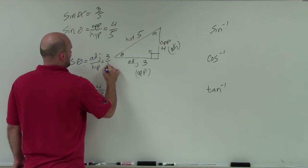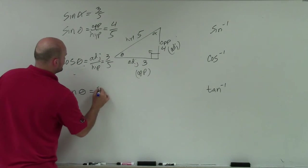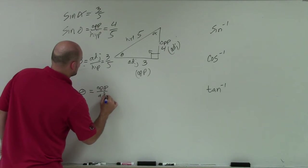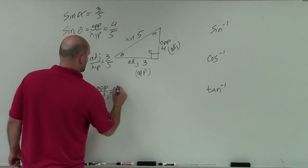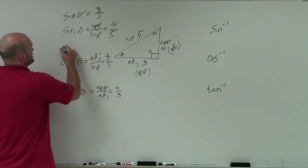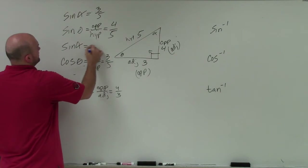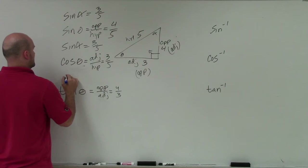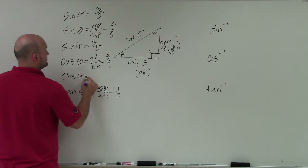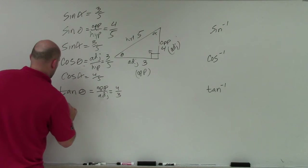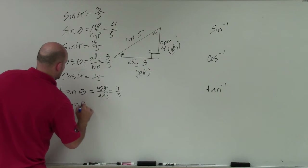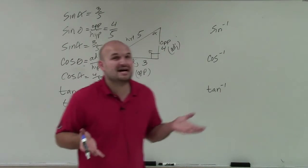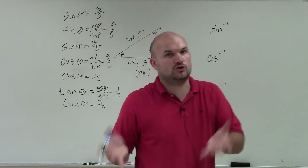The cosine of theta is adjacent over hypotenuse, which is 3 over 5. The tangent of theta is opposite over adjacent, which is 4 over 3. The sine of alpha is 3 over 5, the cosine of alpha is 4 over 5, and the tangent of alpha is 3 over 4. It all depends on which angle you're referring to.